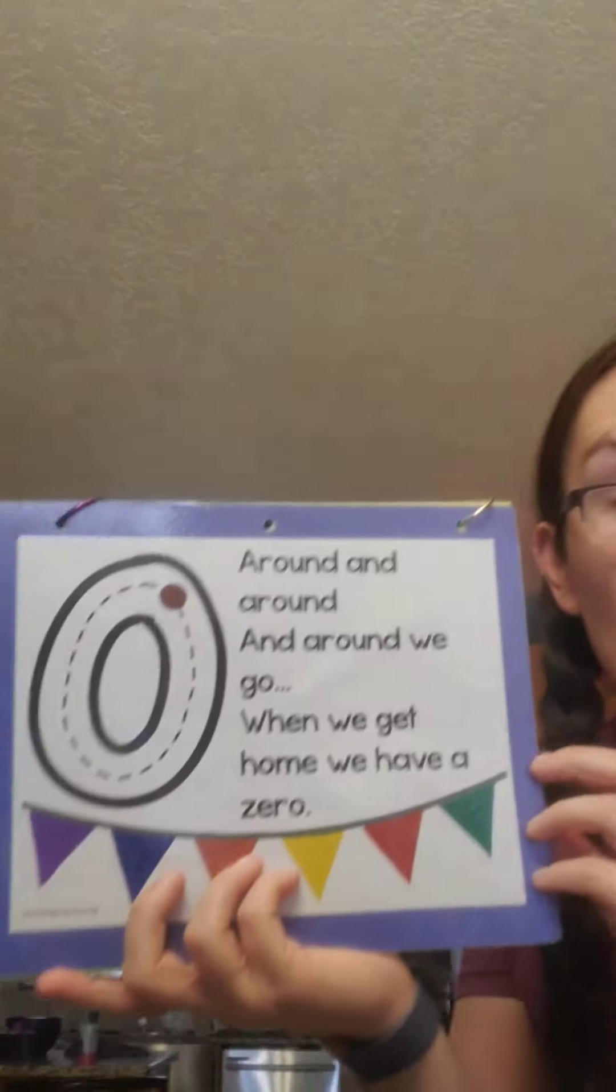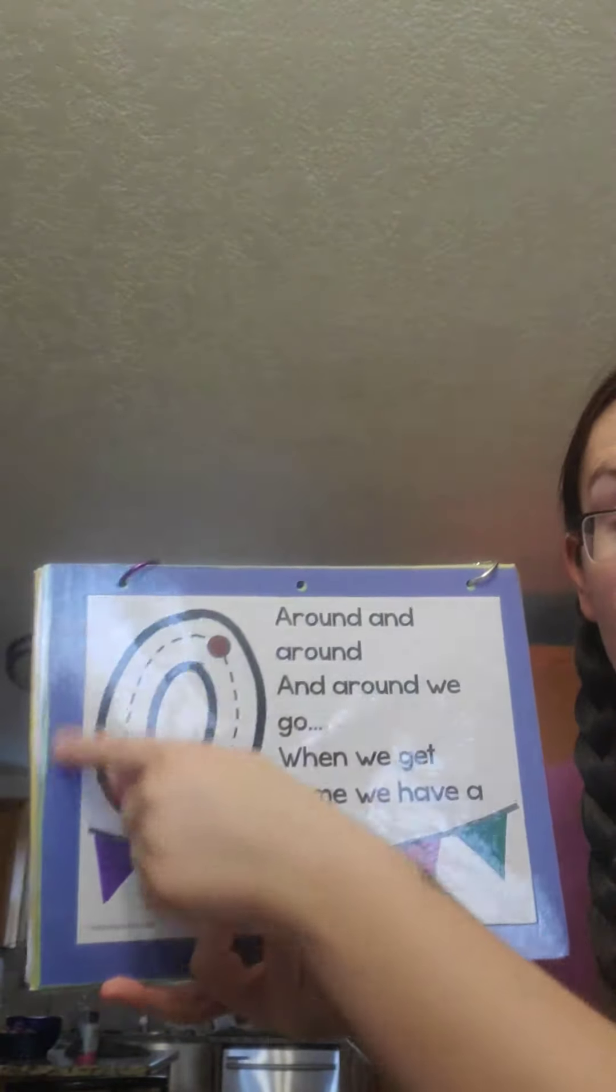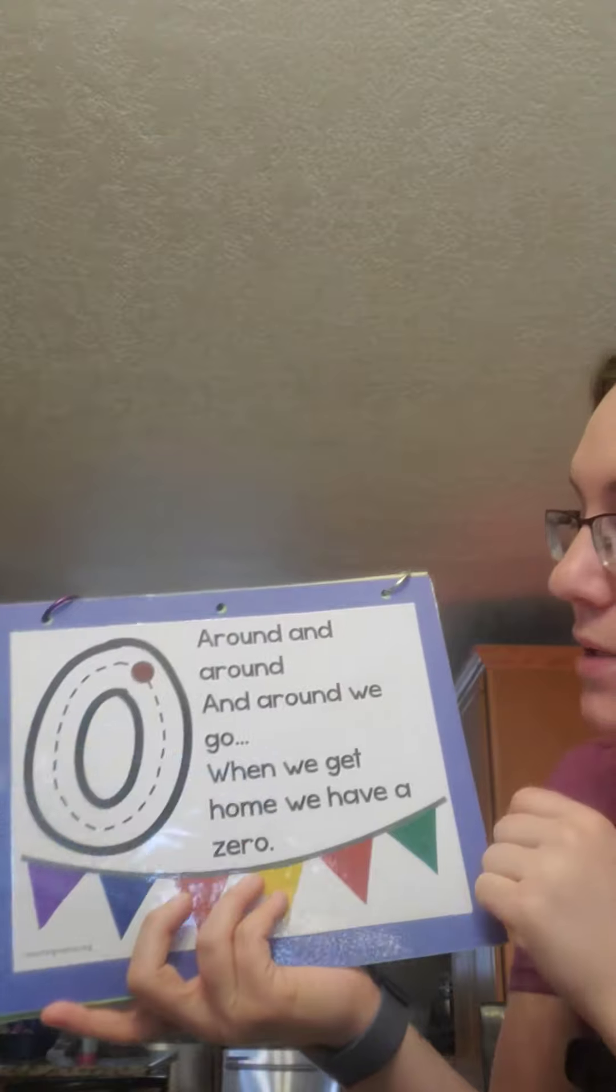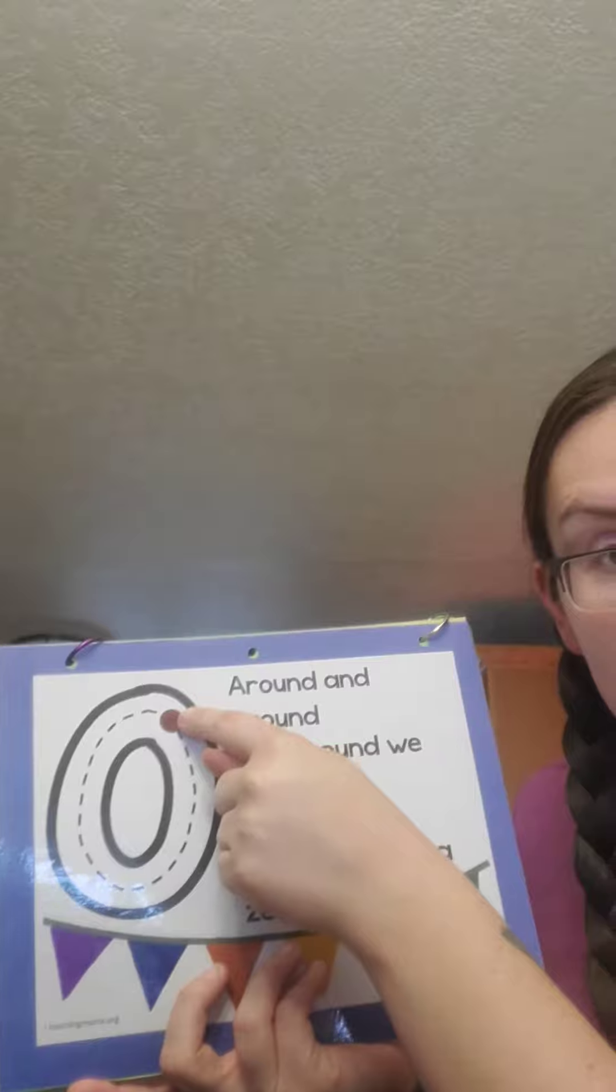Okay friends, let's do one more, okay? This one is our number song, remember? We start and we follow the rhyme. Around and around and around we go. When we get home we get zero.